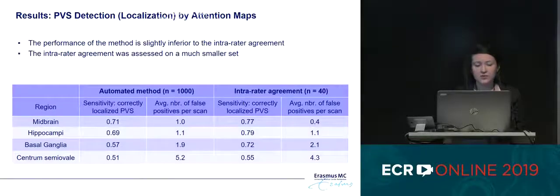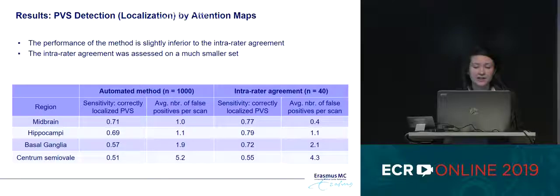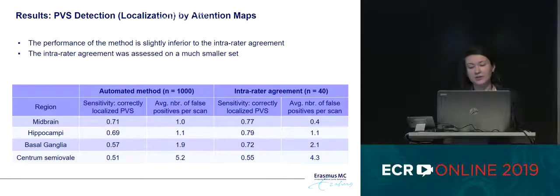We computed sensitivity and average false positive rate of our method on 1,000 scans and found that the detection performance is quite good, though slightly inferior to the intra-rater agreement. However, it must be kept in mind that the intra-rater agreement was computed using only 40 images, whereas our method was evaluated on 1,000 images.